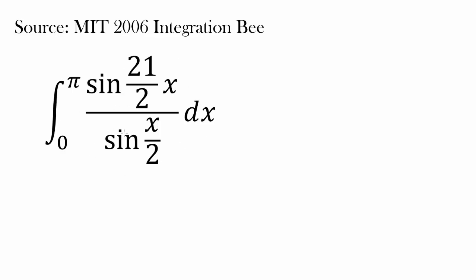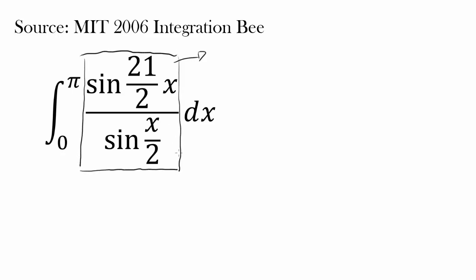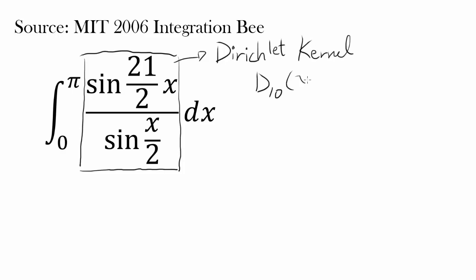One way of starting this is by realizing that the entire fraction — sine of (21/2)x over sine of x/2 — is a special case of the Dirichlet kernel. This is actually D sub 10 of x.